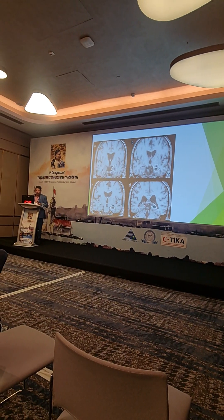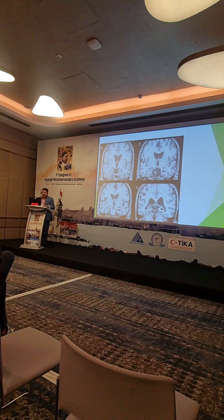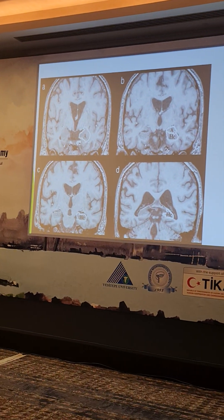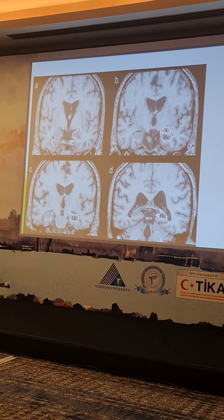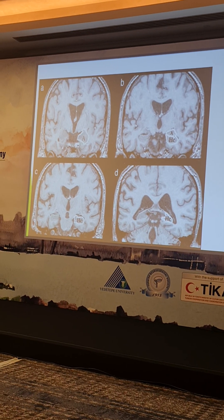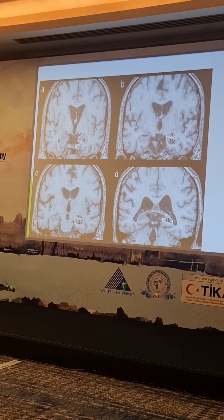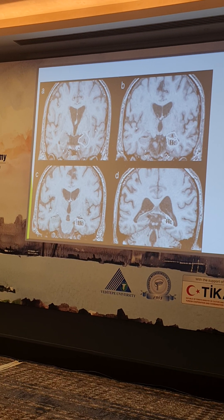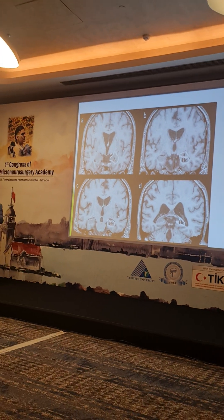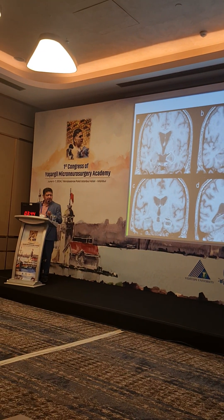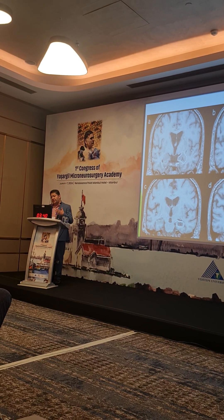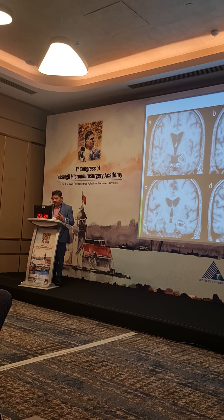Here I will show you: A is the amygdala, HC is the hippocampal head. They are very near to each other, and they are also near to the parahippocampal gyrus. These structures are involved in many cases, but in selective cases the amygdala is only involved, and we should be able to remove the amygdala and save the hippocampus if you want to preserve good memory and temporal function for the patient.